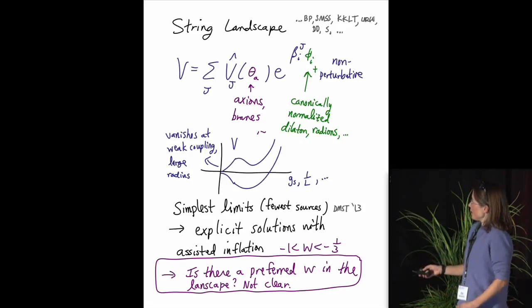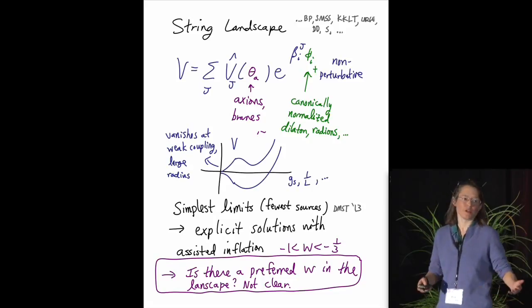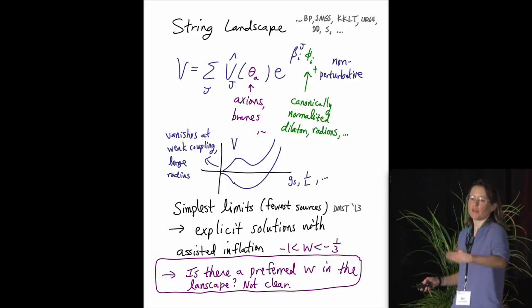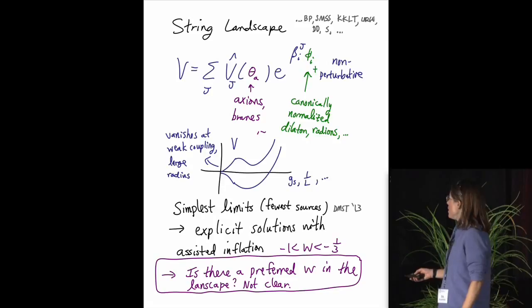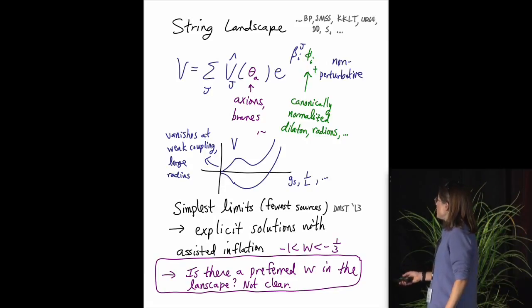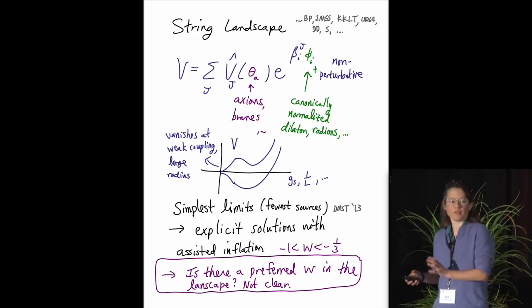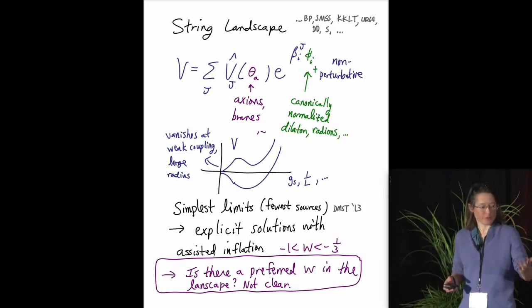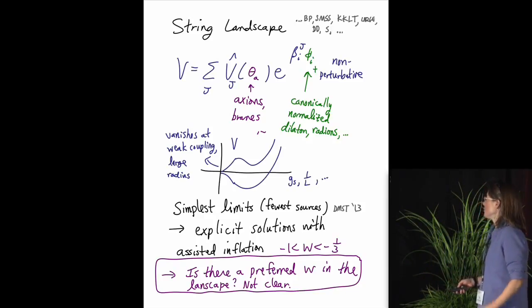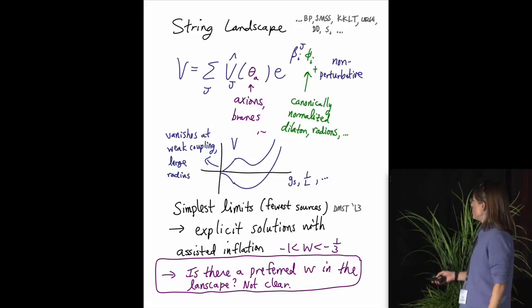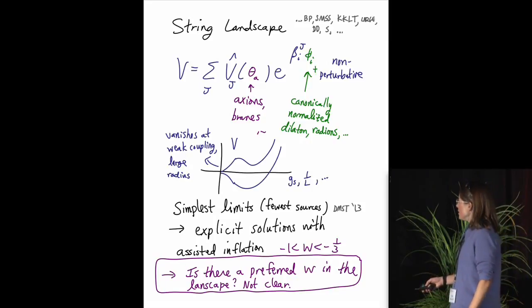This potential energy has a qualitative feature that's quite important, that it decays to zero at weak coupling and large radius, which is where we have the most theoretical control. Very recently, we found in our rampage to simplify models of accelerated expansion, just reducing the number of ingredients that are required to generate it, I would say the simplest examples that we've found so far give what is known as assisted inflation with equations of state that accelerate with relatively few ingredients.